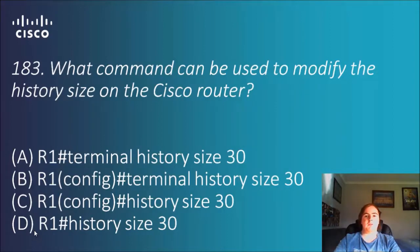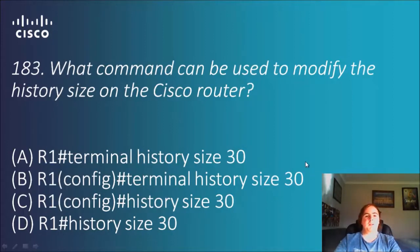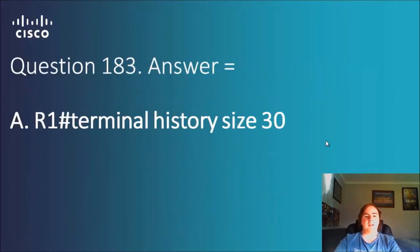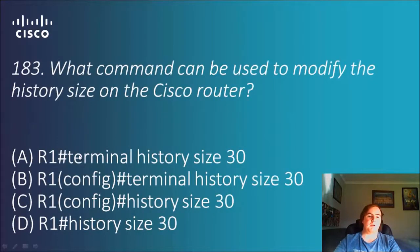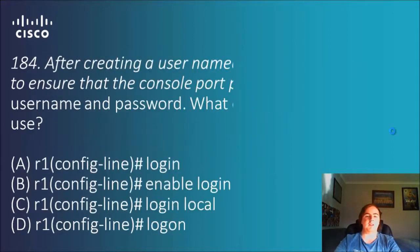Question 183: What command can be used to modify the history size on the Cisco router? There are two options in privileged exec mode and two in global configuration mode, so you can't narrow it down by mode alone easily. The answer involves 'terminal history size'. A reminder: privileged exec mode shows a hash next to the router name, global configuration mode shows 'config' followed by a hash. The answer is 'terminal history size 30' in privileged exec mode — answer A.